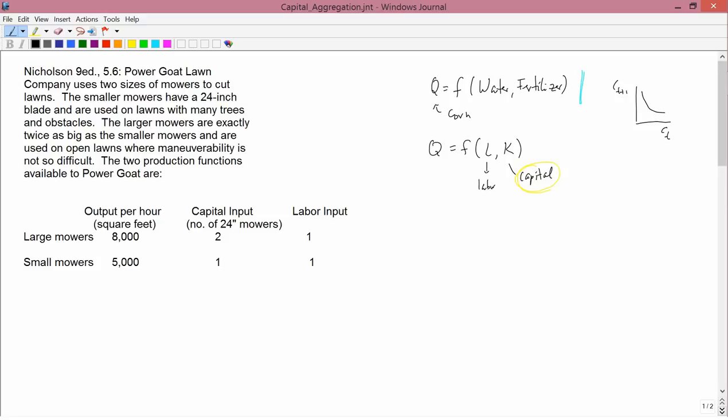And then Nicholson goes to ask some questions about this, and I'm not interested in the questions that Nicholson asks. Instead, what I'm interested in here is just the idea that he's working really hard to get this in the form Q equals F of K and L.